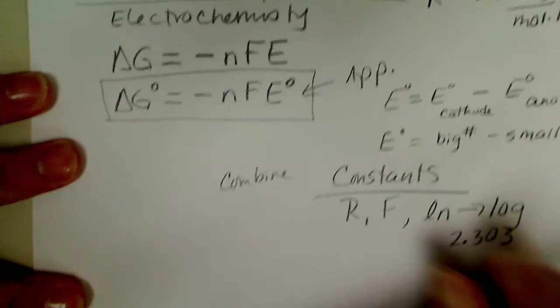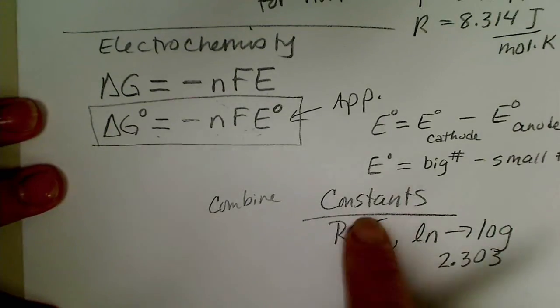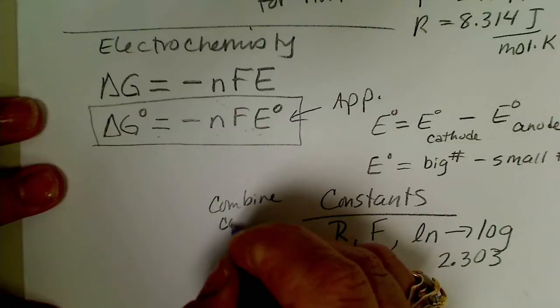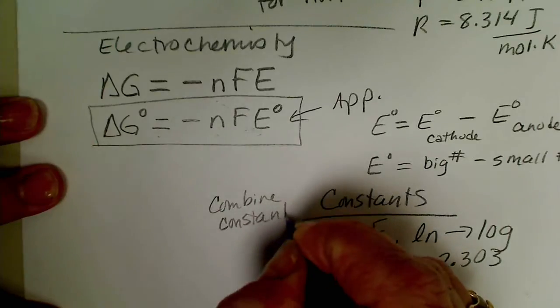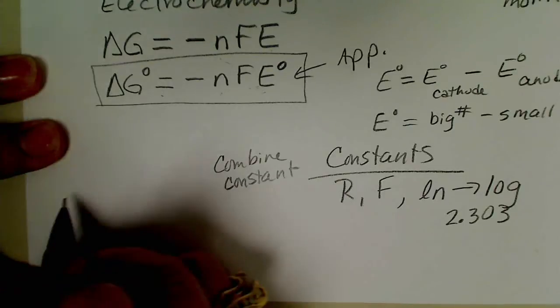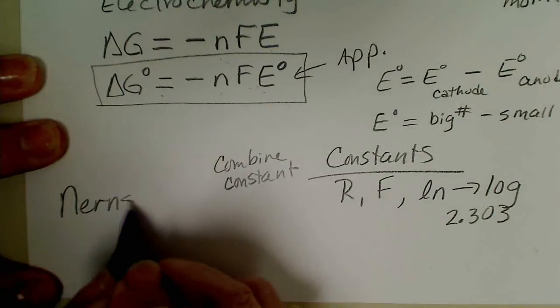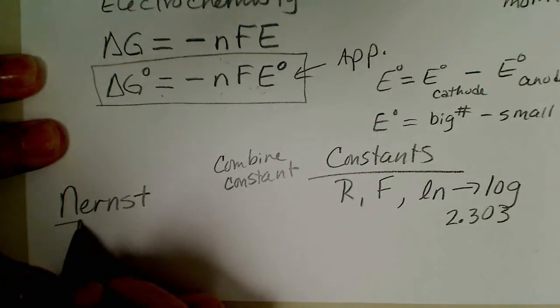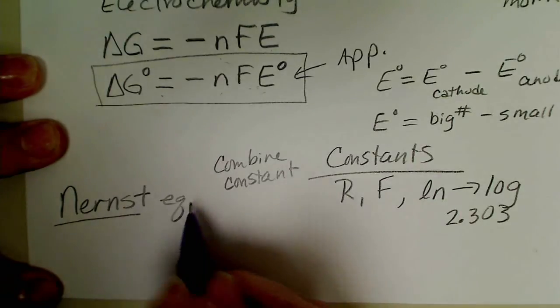And combine all the constants, there's no reason to have multiple constants in one equation. So if we do all that we'll get the Nernst equation and he is very famous for working with electrochemistry and developing a lot of theory.